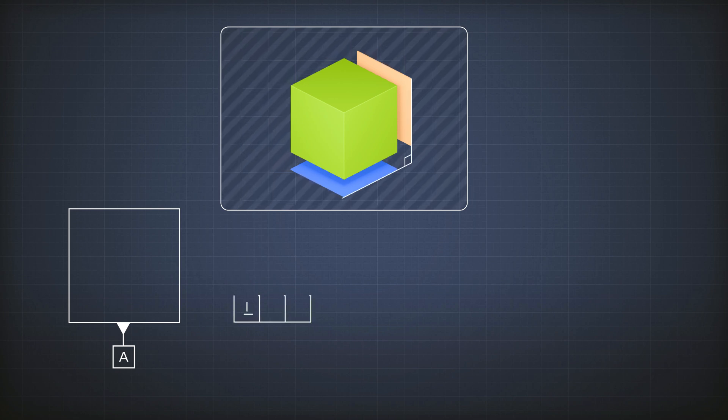So I put the symbol of perpendicularity which looks like that, and I'd say here is my reference and the value is 0.1, which means I have two parallel planes.